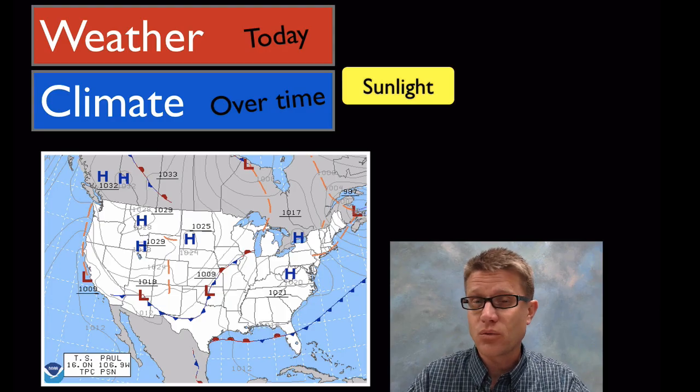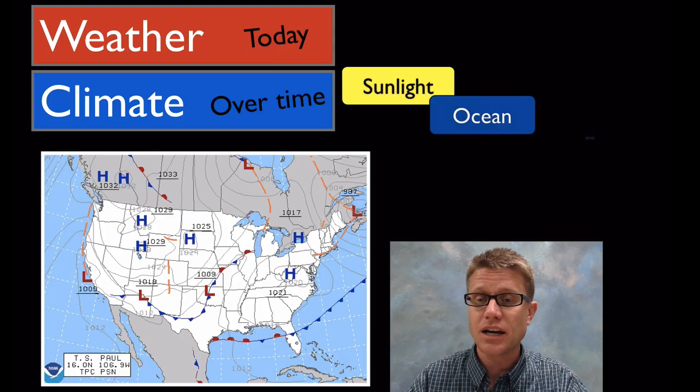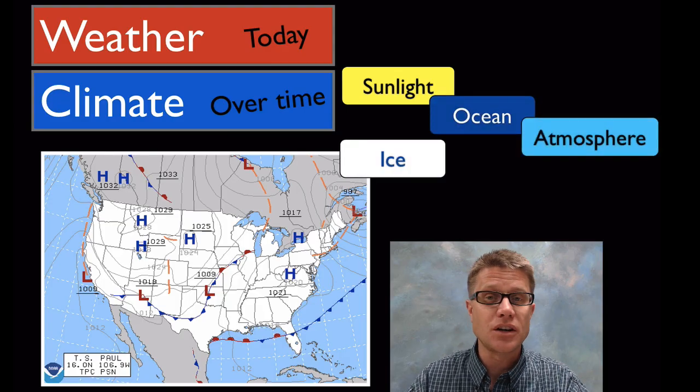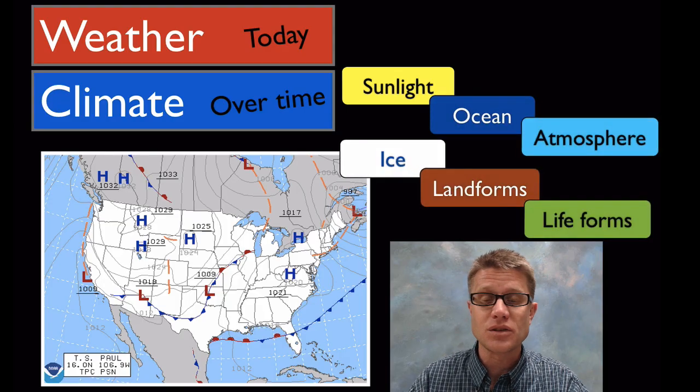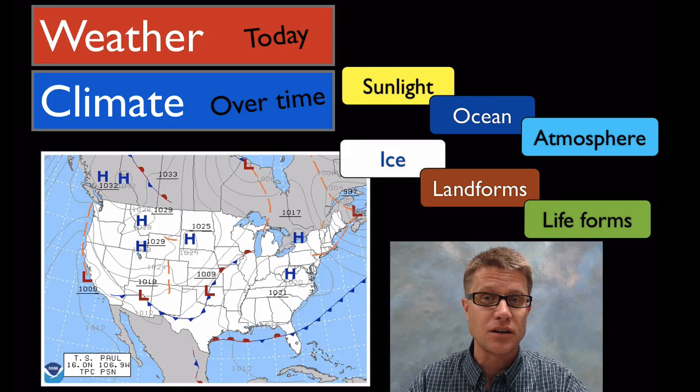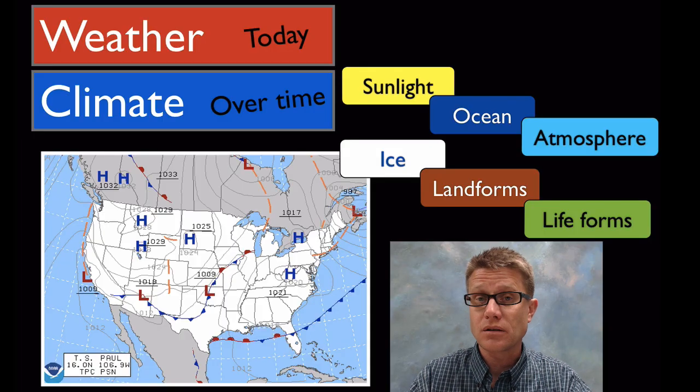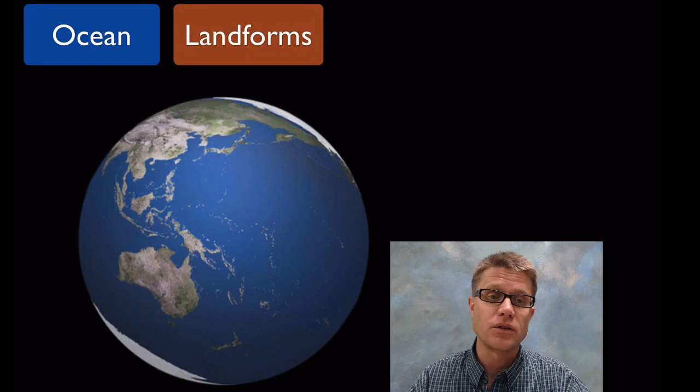So what causes weather? What causes climate? Well, a number of different factors: the amount of sunlight, oceans, atmosphere, ice, landforms, lifeforms. All these things interacting together give us our weather today or our climate over time.